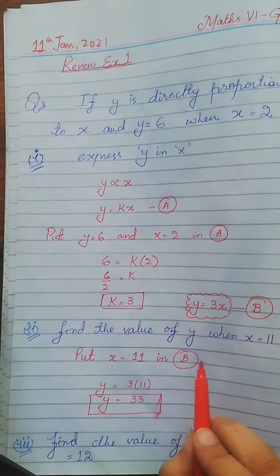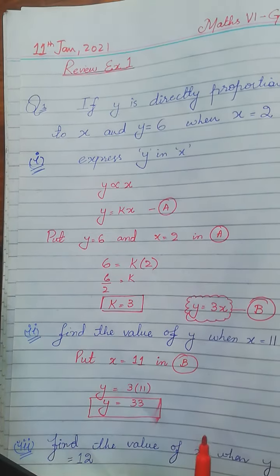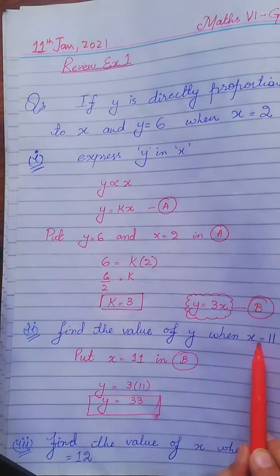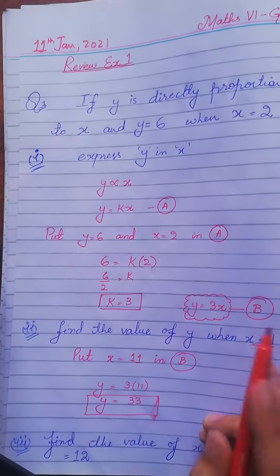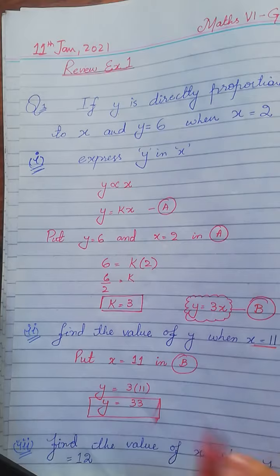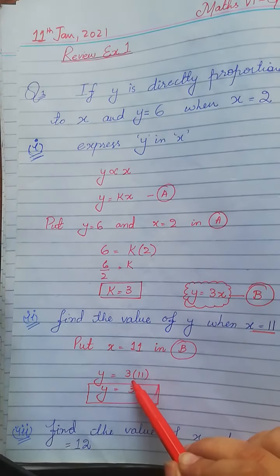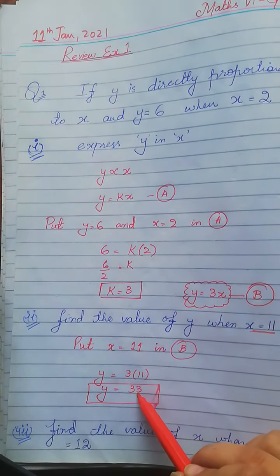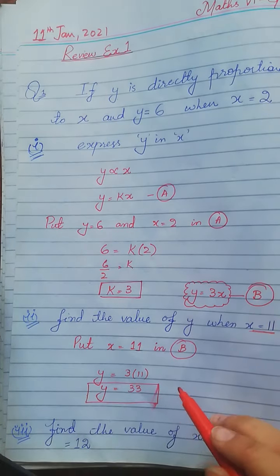For the second part, we find the value of y when x is equal to 11. We substitute x = 11 into equation b: y = 3 × 11 = 33. So the value of y is 33.